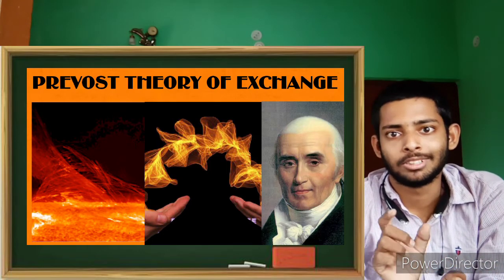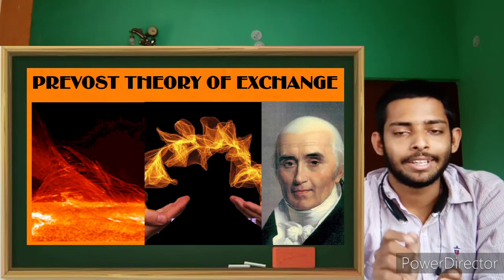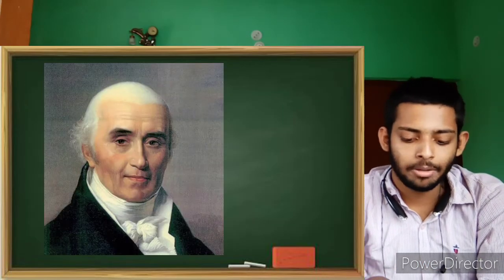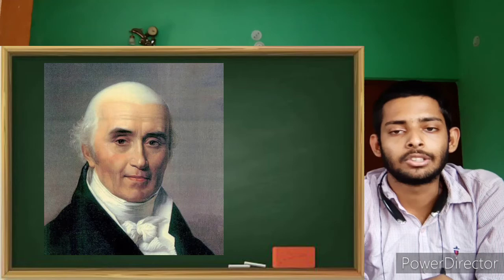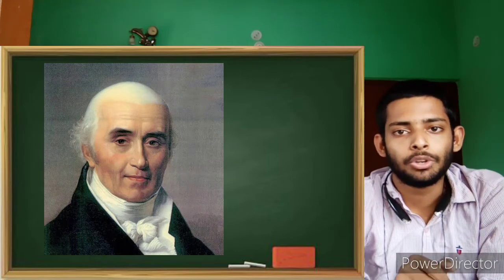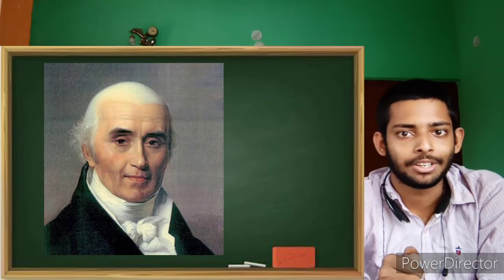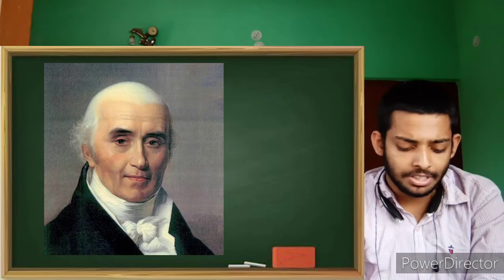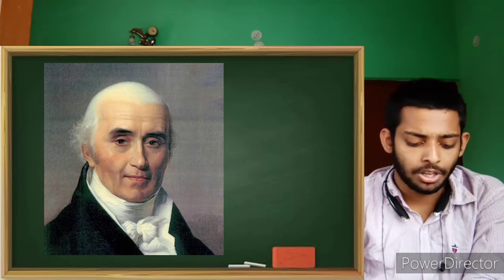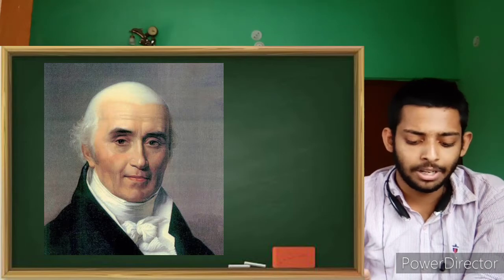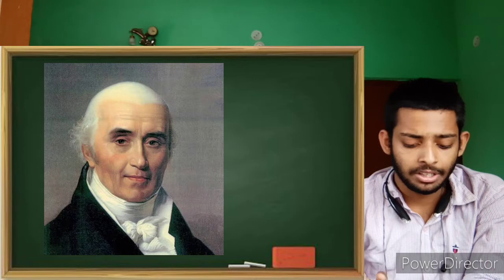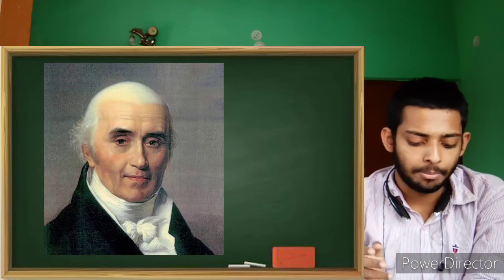So in 1972, Pierre Prevost was the scientist who put forward this theory about radiation. In which he gives the statement that according to his theory, all body radiates thermal radiation at all temperatures.